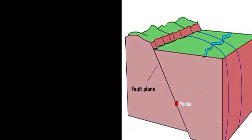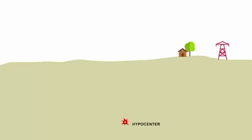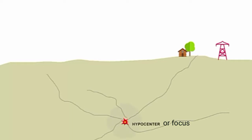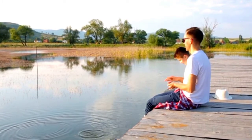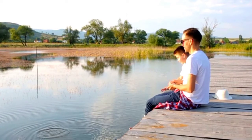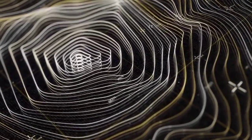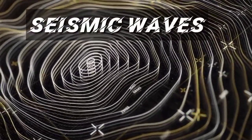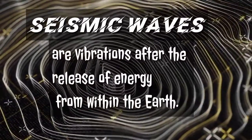When a fault suddenly moves, an earthquake is generated. The shaking starts from the focus and spreads out. You can get an idea of how this happens by throwing a pebble into a pond — see the ripples that move out in circles? The vibrations from the focus are something like that. These vibrations are more properly called seismic waves, which are the vibrations released after the release of energy from within the earth.